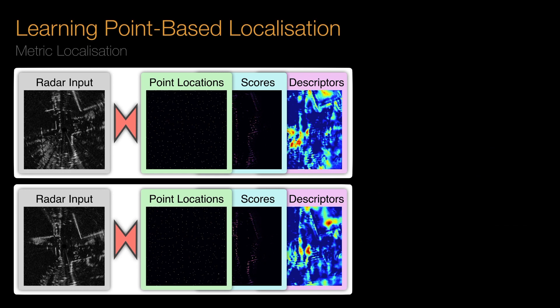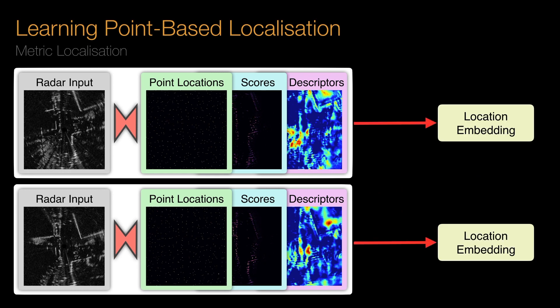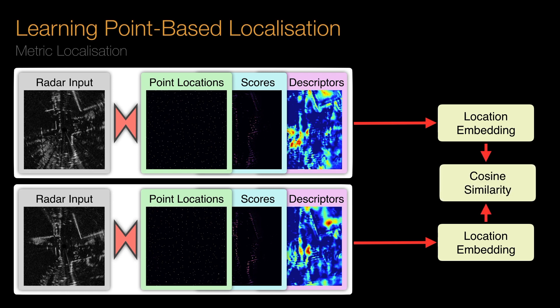We use the same framework for metric localisation and simply max-pool descriptors to give a location embedding, representing the real-world location at each radar scan. We compare against previously stored embeddings, and if above a threshold, solve for a metric loop closure using the pose estimation already mentioned.